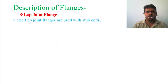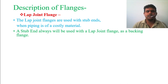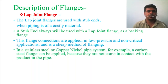Lap joint flanges are used with a stub-in when the piping is of a costly material. If the pipe is a costly material, you can use the lap joint type of flange — the flange itself may be a cheaper material while the actual pipe material is very costly. The stub-in is always used with the lap joint flange as a backing flange. This flange connection is applied in low pressure and non-critical applications, and it is considered a cheap method of flanging.